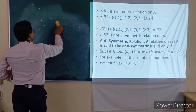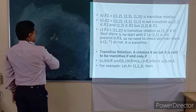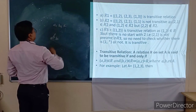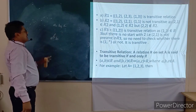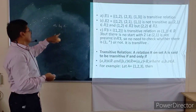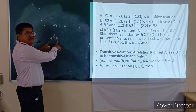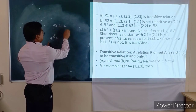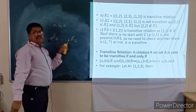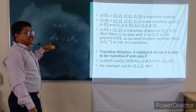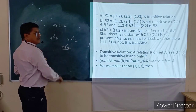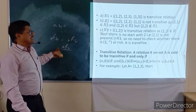The third type is the Transitive relation. If A is related to B, and B is related to C by the same relation, then A is automatically related to C by the same relation. For example, if A is a friend of B, and B is a friend of C, then A is also a friend of C. This type of relation is known as a Transitive relation.